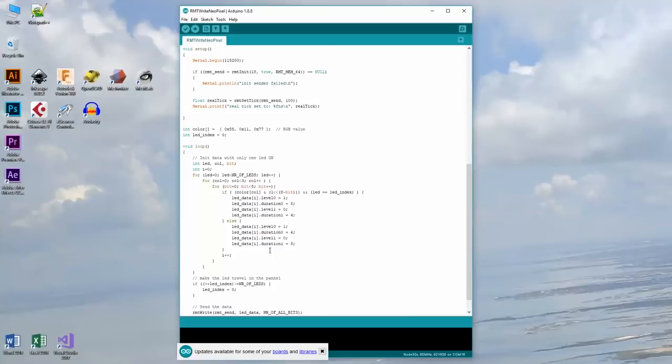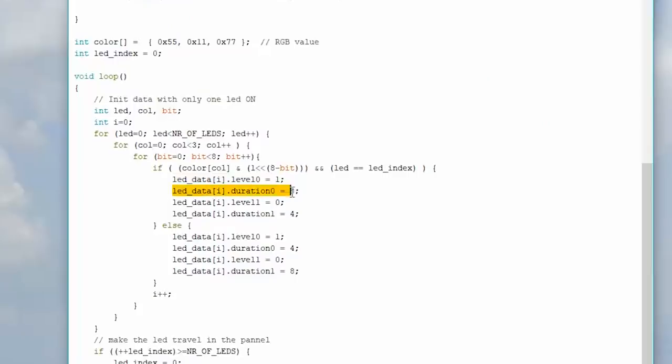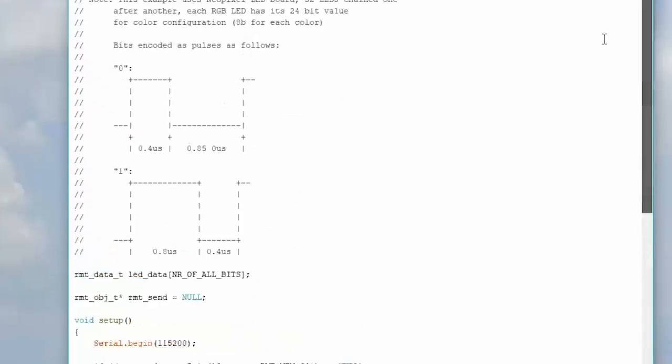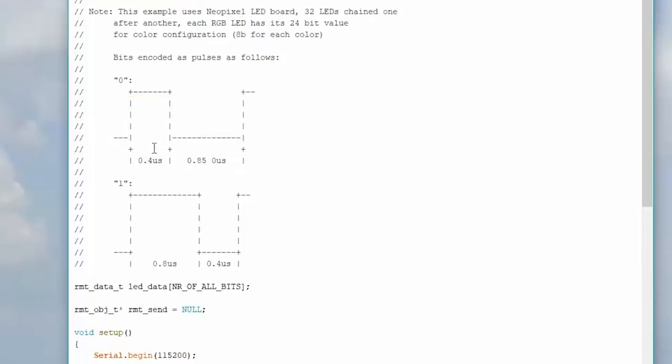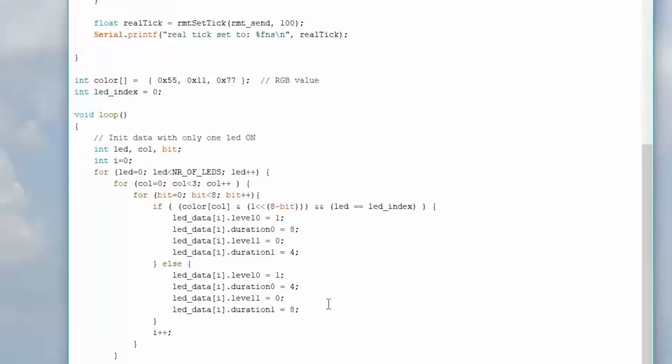Alright, so let's see if this library works. I tested it out, but what's all this? Wait, for every bit? Look at this, for bit equals zero, bit is less than eight. So for every bit it's doing this. So every bit has four variables? Level zero, duration zero, level one, duration one. Oh okay, yeah. So it's like, is this high or low? That's the level. Length, 400 nanoseconds. And then the off period, level zero, time 850 nanoseconds. Four variables per bit?